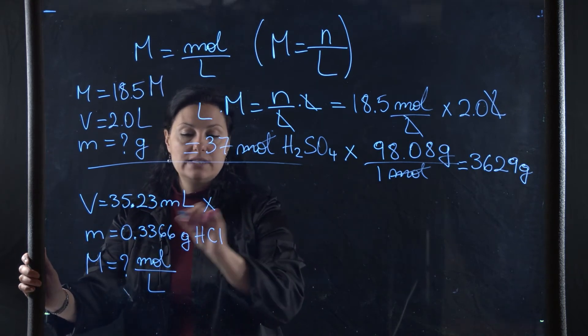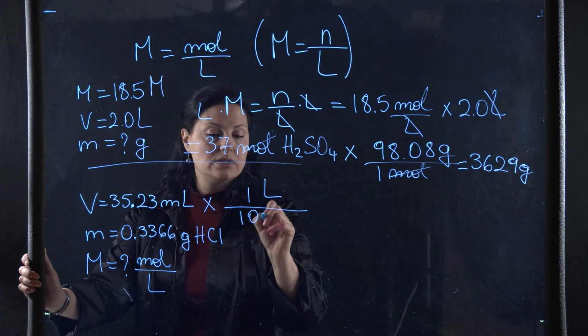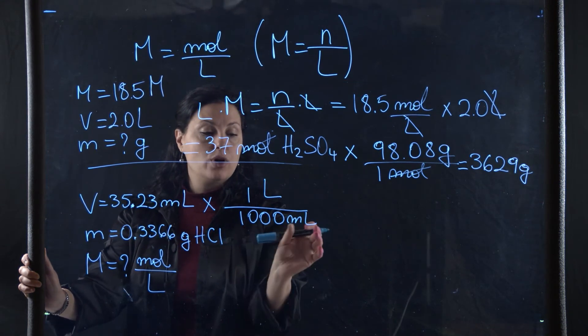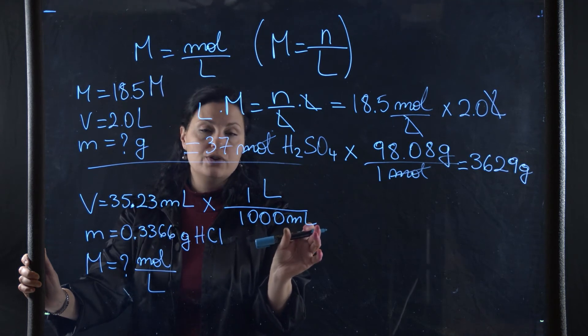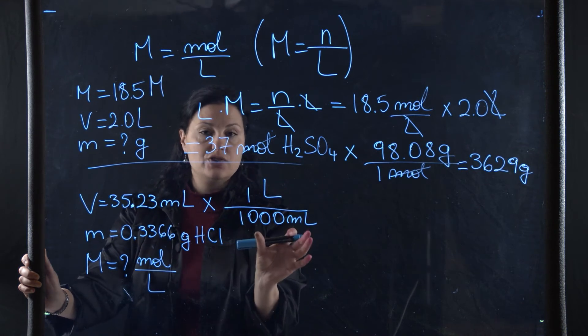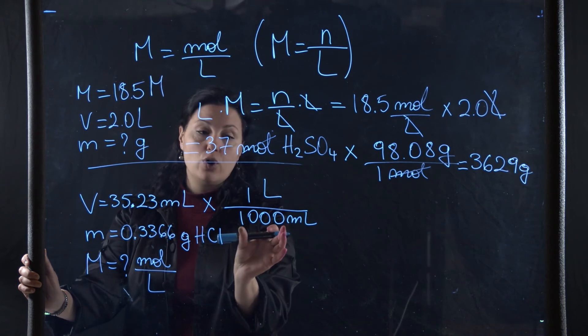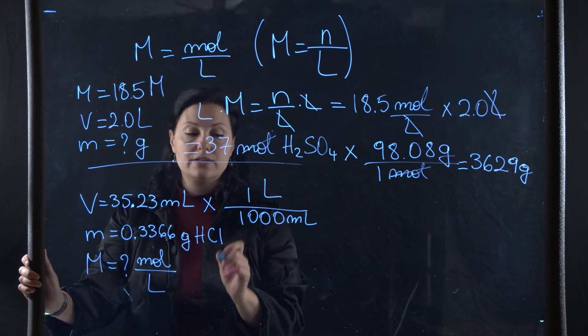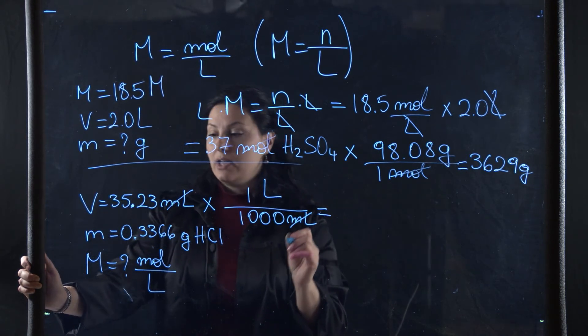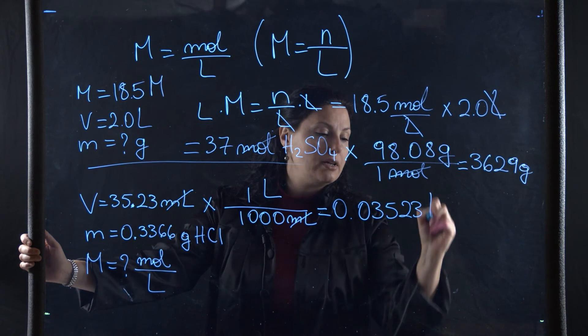First, let's convert milliliters into liters. I know that one liter contains a thousand milliliters. This is the larger unit, so it has more of the smaller unit, like foot and inches. One foot has 12 inches. My milliliters will cancel, so I divide by a thousand and this will be 0.03523 liters.